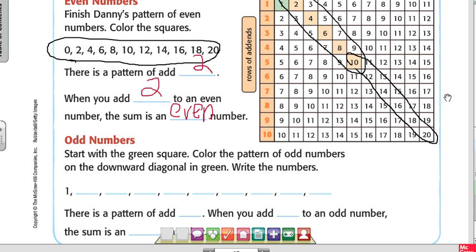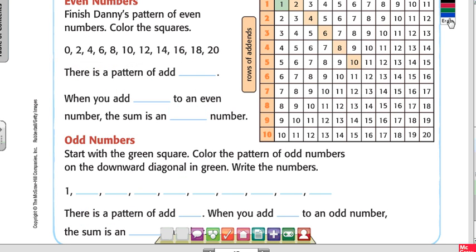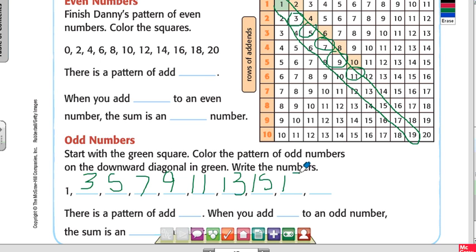Now we're starting with the green. Start with the green square. Color the pattern of odd numbers on the downward diagonal in green. So I start with one. What comes next? Three, then five, seven, nine, eleven. What comes next? Thirteen, fifteen, seventeen, and then nineteen at the end.